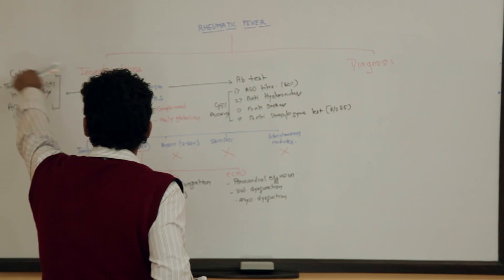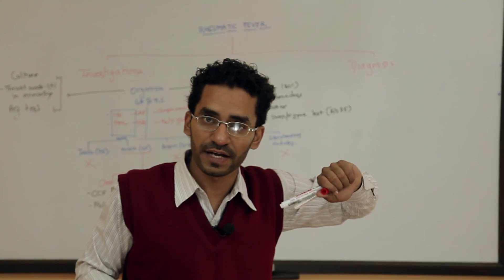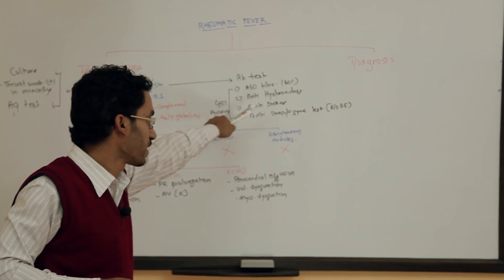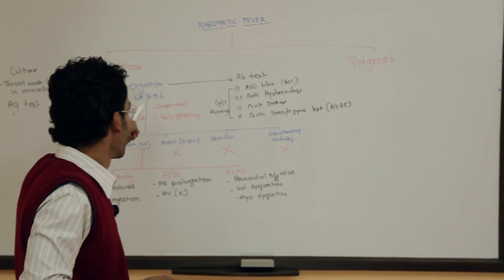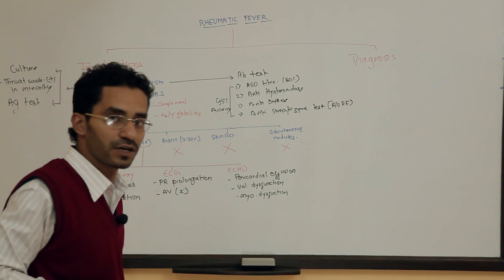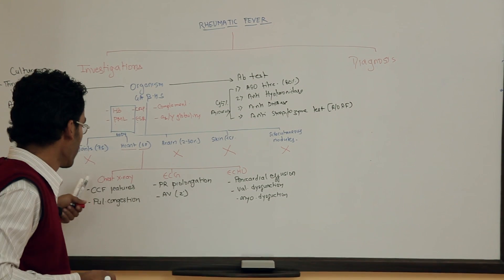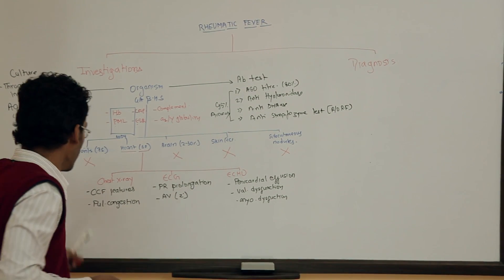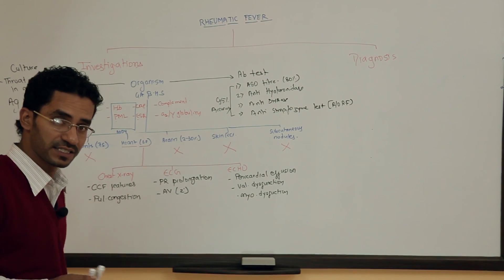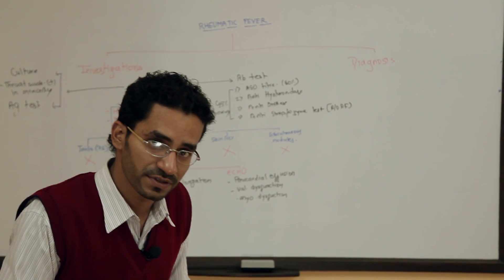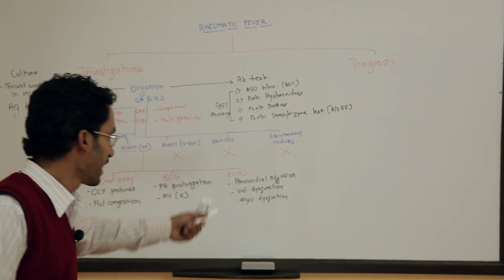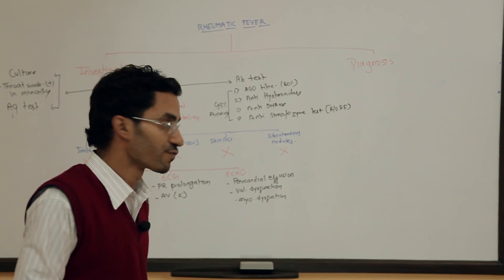To summarize: for the organism, we go for culture and antigen testing — culture is positive only in a minority of cases, so we rely on the four antibody tests. Blood investigations include hemoglobin, leukocyte count, CRP, ESR, complement, and Alpha-2 and gamma globulins. For the heart, we do chest X-ray to see features of congestive cardiac failure and pulmonary congestion; ECG for PR prolongation and AV block; and echocardiogram for pericardial effusion, valvular dysfunction, and myocardial dysfunction.